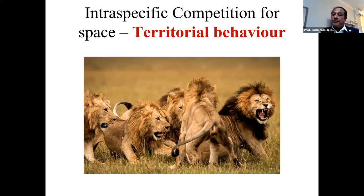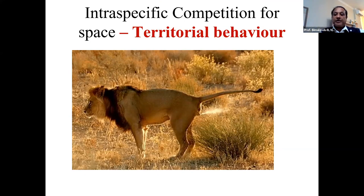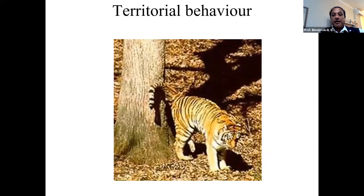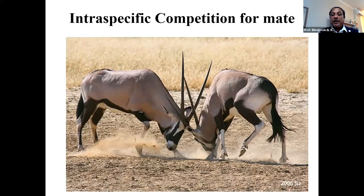If the territory is violated, the animal becomes alert and severe aggression starts. Marking territory with urine is quite common in many animals. Territorial behavior is also common in birds. This leads us to interspecific competition for a mate.